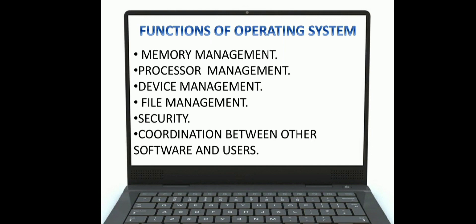Next is device management, one of the most important functions of the operating system, as it keeps track of all the devices. The operating system is also called an input/output controller that decides which process gets the device, when, and for how much time. Next is file management — the operating system allocates resources and decides who gets them. It also controls the cache memory, deciding when the CPU requires data stored in the cache memory and when it does not.